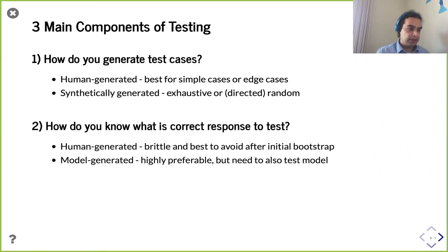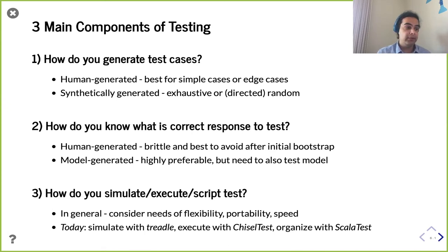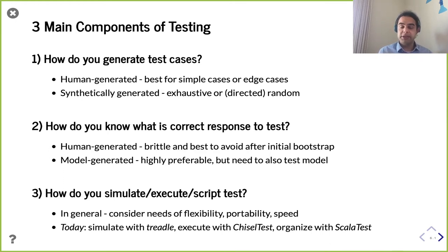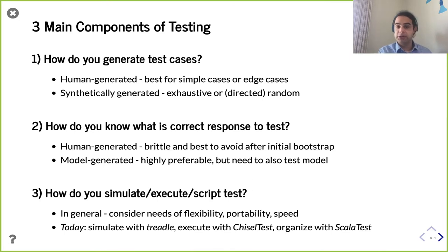We talked about those three important things for testing: you need to figure out some way to generate test cases and stimuli, you need to know what the right answers to those test cases are, and you need some way to tie it all together. We did this with manual examples and then built toward a more automated method using either randomization or exhaustive enumeration to generate test cases. To know the correct response, we used some sort of model — a behavioral Scala model that mimics the expected behavior.